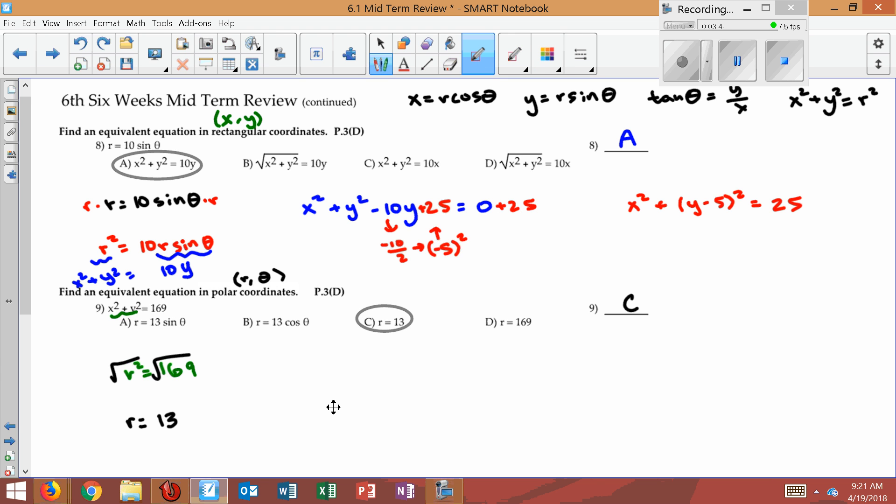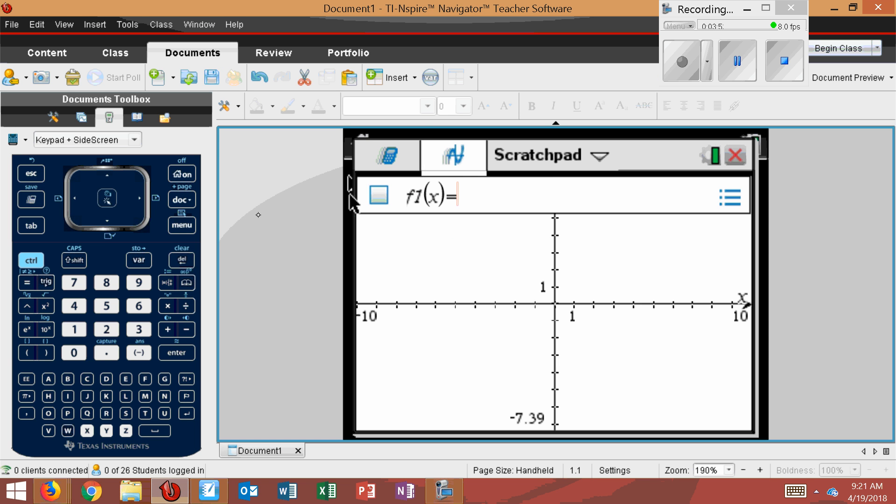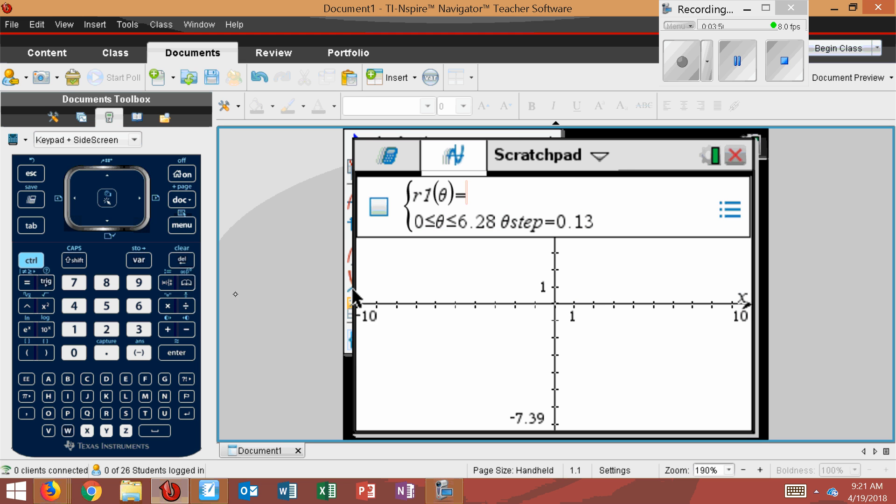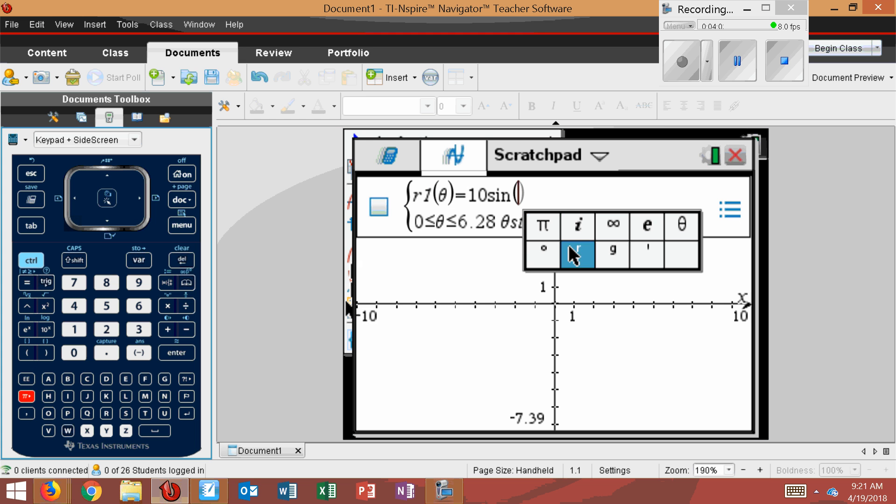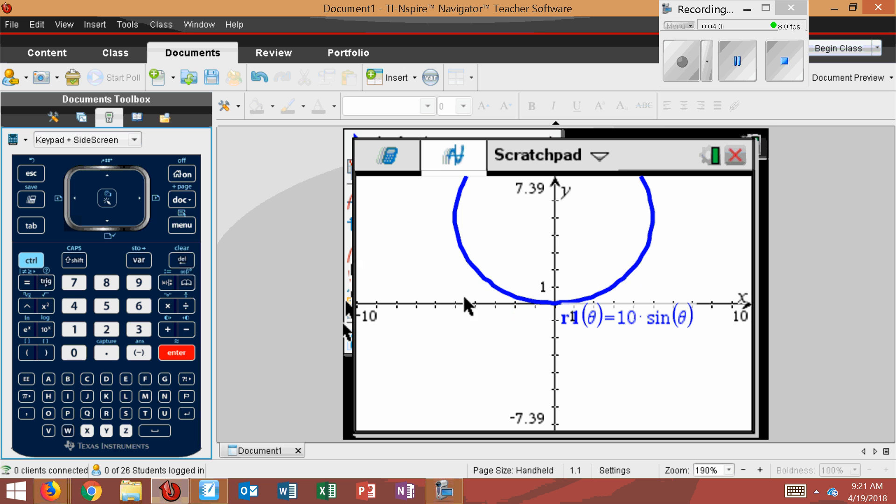Now, before we finish up, surely there's a way to check these in the calculator. And there is. So we'll first try r equals 10 sine theta. That was in polar. So if I go over here, go menu, graph entry. I'm going to choose polar. And it was 10 sine theta. And press enter. And we got this graph here.